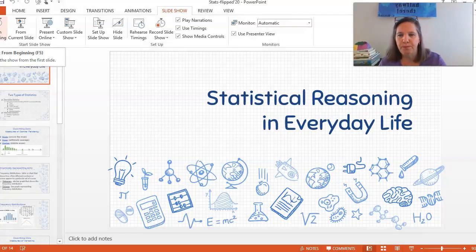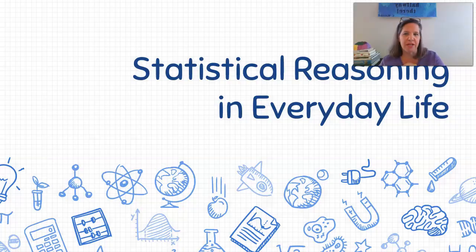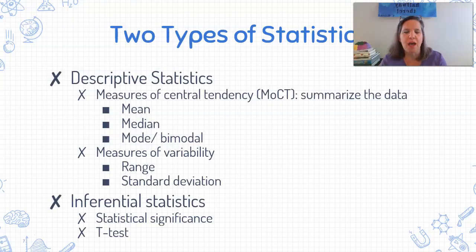So let's take a look. Get started. All right, so statistical reasoning in everyday life. So there are two different types of statistics that psychologists use to look at their data. The first type are called descriptive statistics. It is exactly what it sounds like. These are statistics that we use to describe the data that we have gotten.